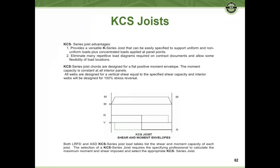KCS joists are joists designed for constant shear. The top chord is designed for a flat moment diagram, and all the webs are designed for the shear in the joist — so they'll all be the same size. All webs are designed for vertical shear equal to the specified shear capacity, and interior webs are designed for 100% stress reversal. If you don't know your loads or anticipate they'll be significant, specify KCS joists so we don't have to worry about locating all point loads from mechanical units — it's an easy way to avoid evaluation later.